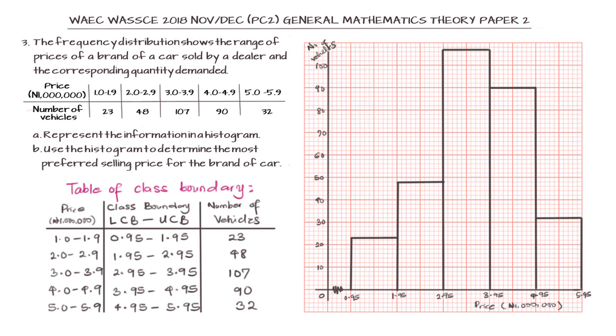We are asked to use this histogram to determine the most preferred selling price for the brand of car. To do this, we look at the highest bar. From this highest bar, what we are going to do is that we cross from the two entries to the left and to the right of it.